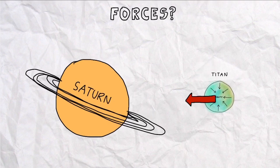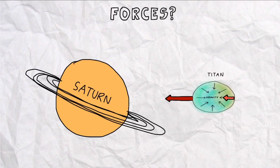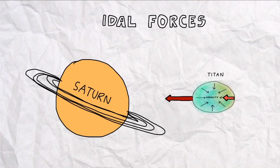Saturn exerts a massive gravitational pull on Titan, but there's something more important to notice here. The side of Titan that is facing Saturn feels a much larger gravitational pull from Saturn than the other side, since it's obviously much closer. This difference in the strength of the gravitational pull across a celestial body causes a special effect known as tidal forces.